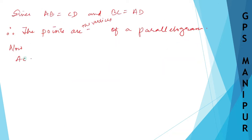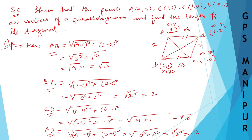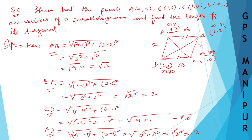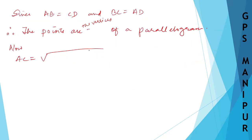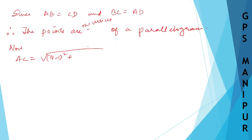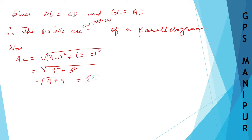AC: A is (4,3) and C is (1,0). Taking x1=4, x2=1, y1=3, y2=0: AC equals root over (4 minus 1) squared plus (3 minus 0) squared, which is root over 9 plus 9, giving root 18. We can write this as root of 9 times 2, which equals 3 root 2.